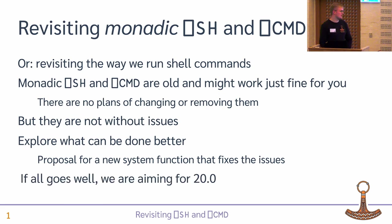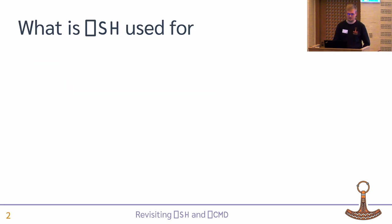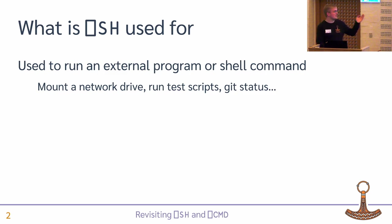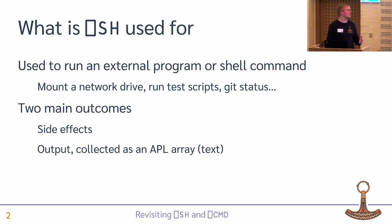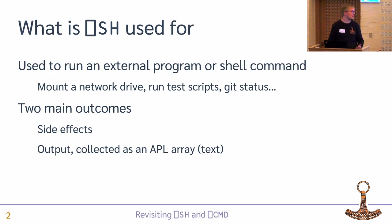If all goes well, we're aiming for version 20. Quad-SH is used to run an external program or a shell command — stuff that's difficult or impossible to do in APL — such as mounting a network drive, running test scripts, git status, and so on. There are mainly two outcomes from running an external program: the side effects of it, and the output produced, collected as text.